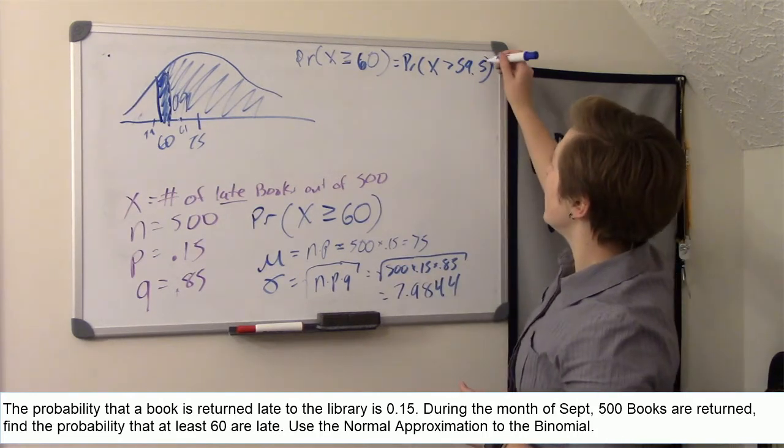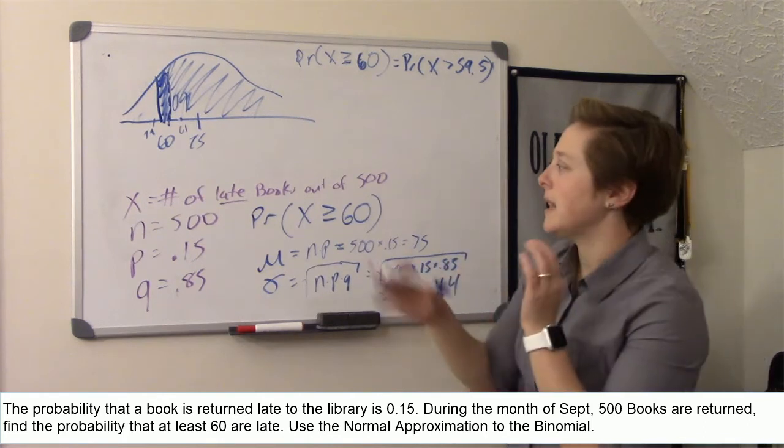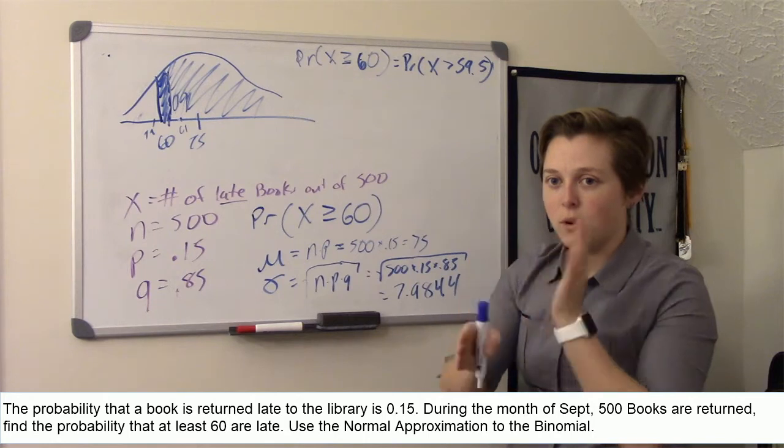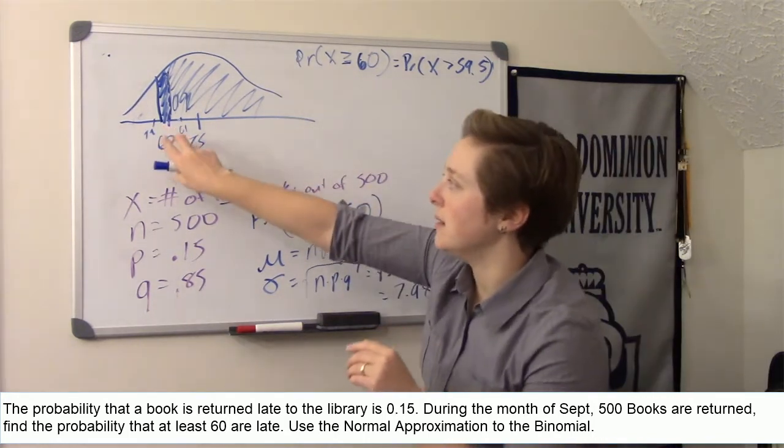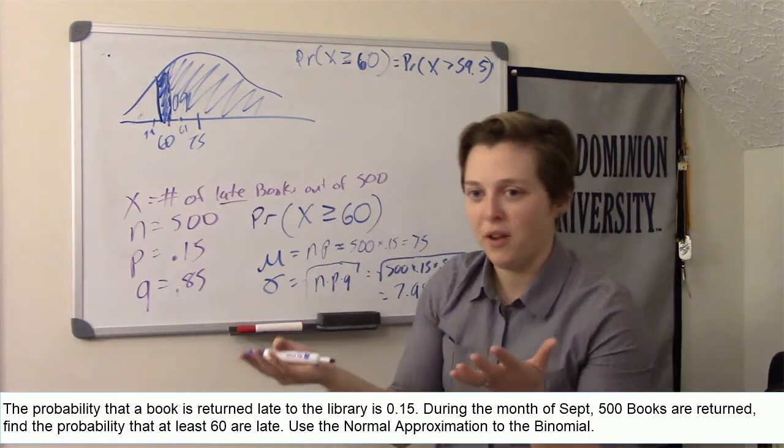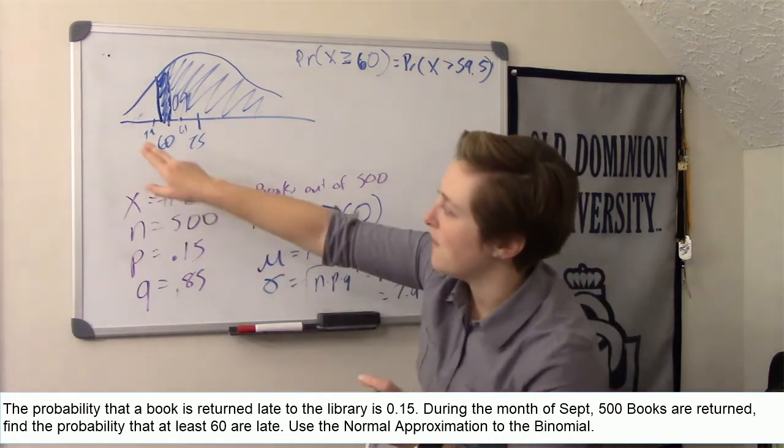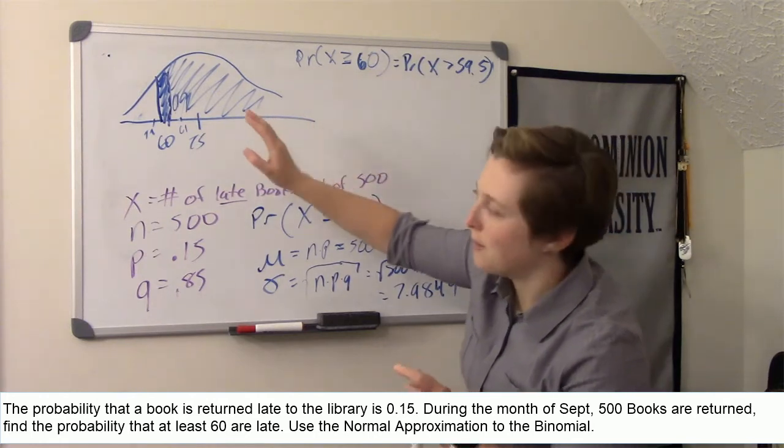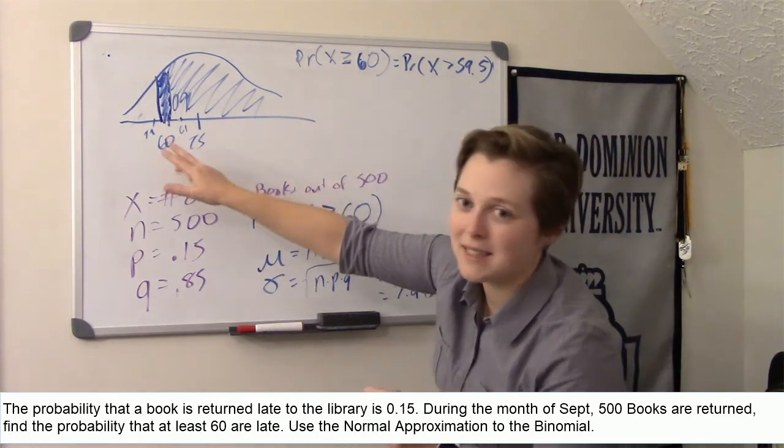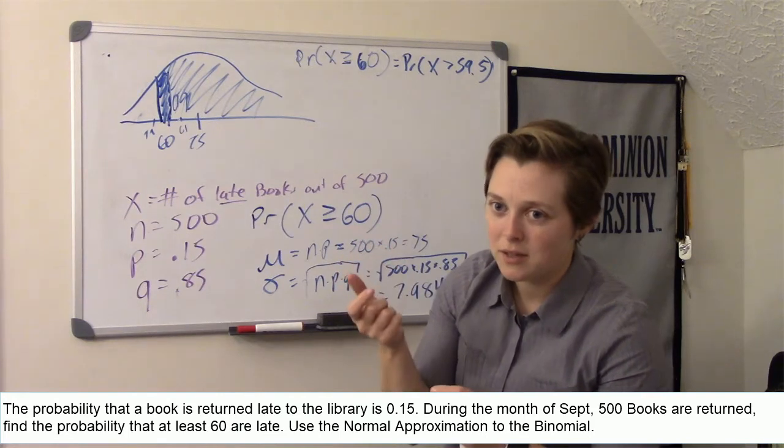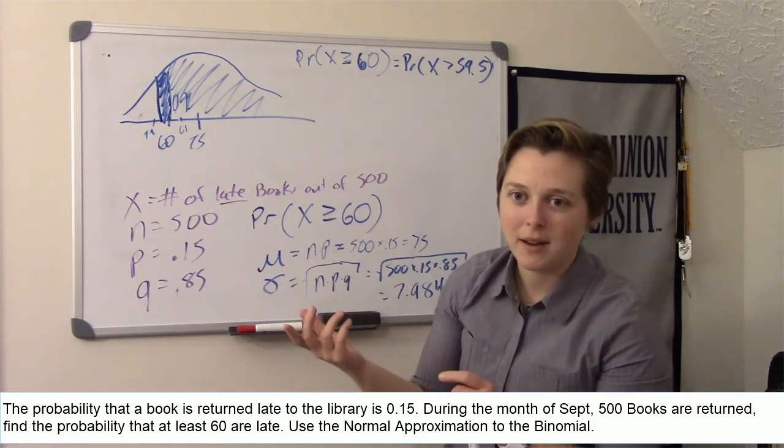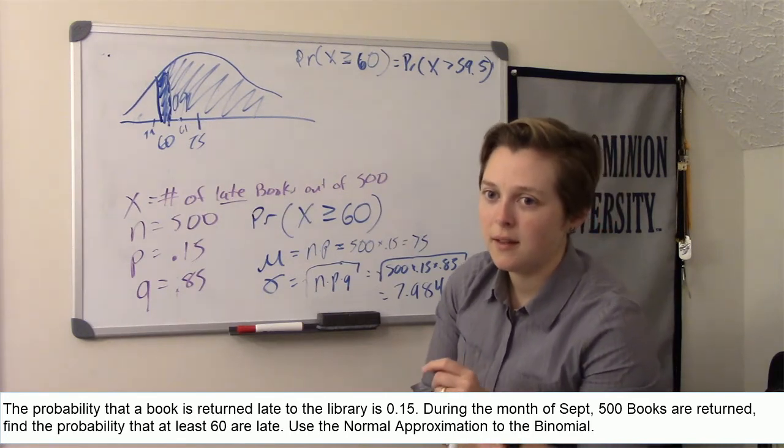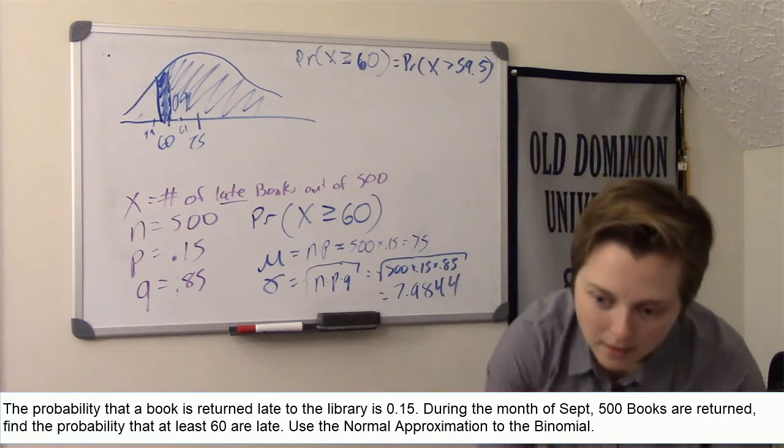Does it matter if it's 0.5 versus 0.9 versus whatever? No, so you always go between whatever your, in this case, so it was a binomial, so you're always counting 0, 1, 2, 3. So you want to go between those two numbers. So it's always going to be 0.5. I'm going between 59 and 60 because I want to include 60. So there's all these numbers between 59 and 60 that the binomial doesn't take into consideration, but the normal does. So binomial is always discrete? Binomial is discrete, yeah.